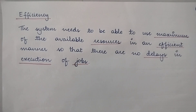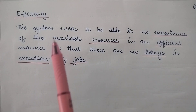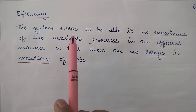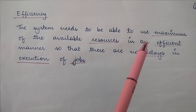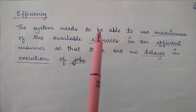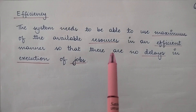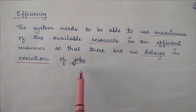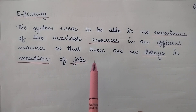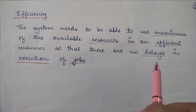The last factor considered while studying operational feasibility is the efficiency of the information system. This system needs to be able to use maximum of the available resources. The information system will be called efficient when all the available resources can be used in the most optimum way so that there are no delays in execution of jobs. With whatever maximum resources are available for operation of the information system, it must be able to provide all these services without any delays.